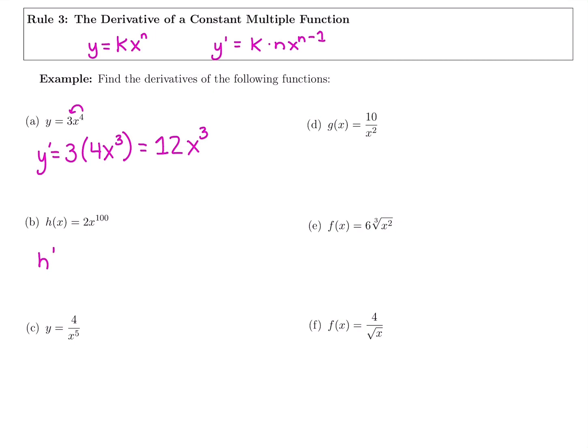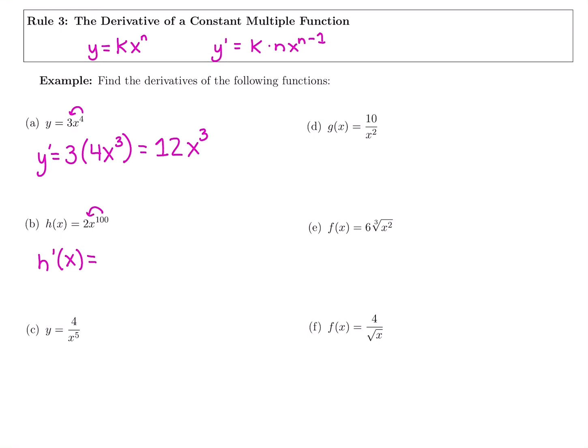So moving down to that h of x, I'm going to label that derivative h prime of x, and I'm going to bring down the power and subtract one for the new power. So keeping the 2, 2 times 100 is 200, and then I'm going to have x to the 100 minus 1 is 99. Bring down the power, subtract one for the new power.